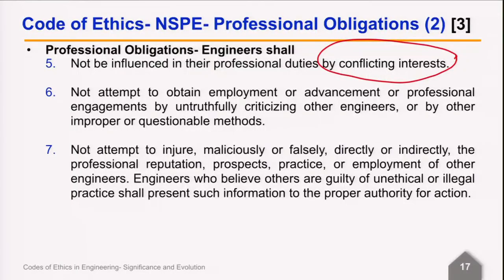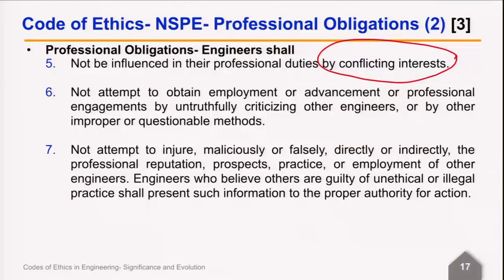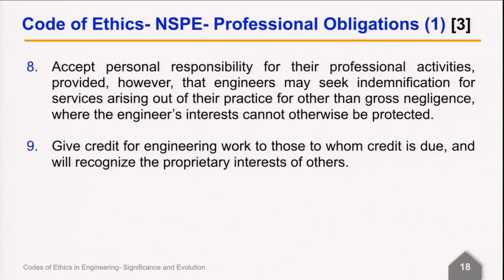Six, not attempt to obtain employment or advancement or professional engagement by untruthfully criticizing other engineers or by other improper or questionable methods — this is one of the most important things when working with large groups. Seven, not attempt to injure maliciously or falsely, directly or indirectly, the professional reputation, prospects, practices or employment of other engineers. Engineers who believe others are guilty of unethical or illegal practices shall present such information to the proper authority for action — what can be termed as whistleblowing. Eight, accept personal responsibility for their professional activities, provided that engineers may seek indemnification for services arising out of their practice for other than gross negligence, where the engineer's interest cannot otherwise be protected. And lastly, give credit for engineering work to those to whom credit is due, and recognize the proprietary interest of others.